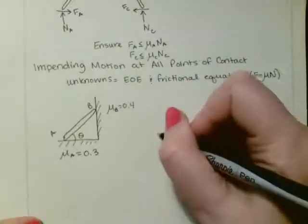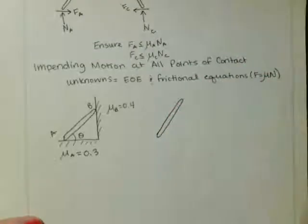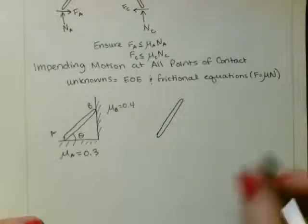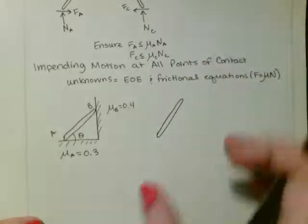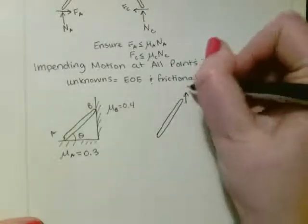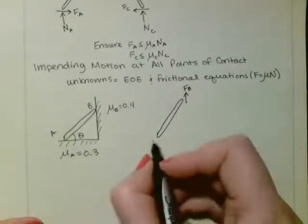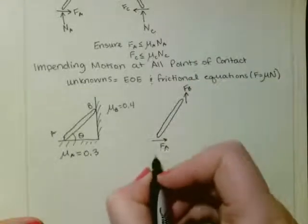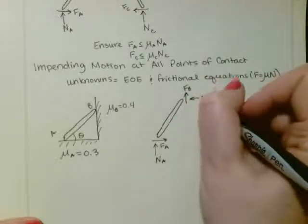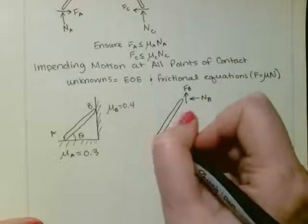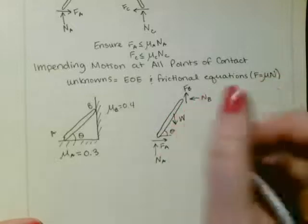So if I were to draw my free body diagram, I would look at this. And if this were to move, it's going to move like this, right? It's going to slide down the wall. So that means my frictional force has to oppose it up here. And my frictional force down here has to oppose it like this. Then I'd have my normal forces. Angle theta. Then I'd have my weight.